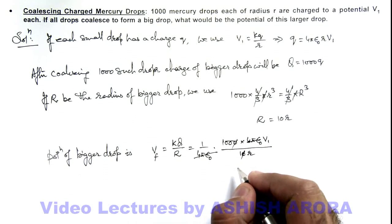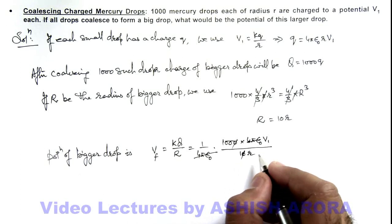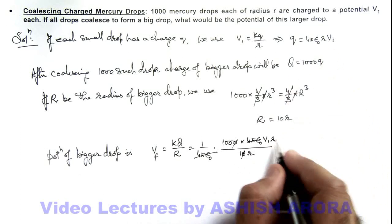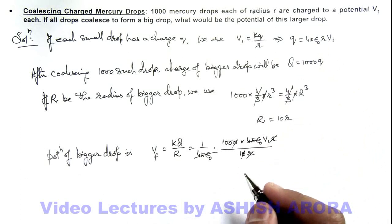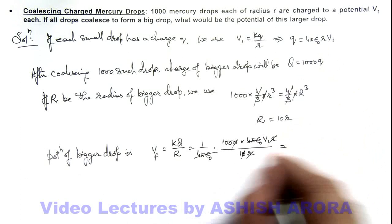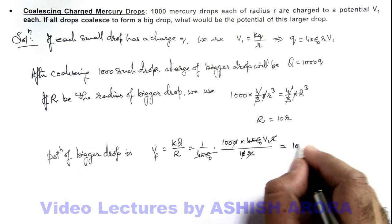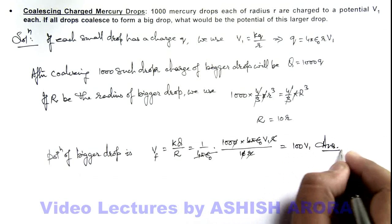This will give us the value. There is one small r also which will get cancelled out. So this can be directly written as 100 times V₁. That is the final result of this problem.